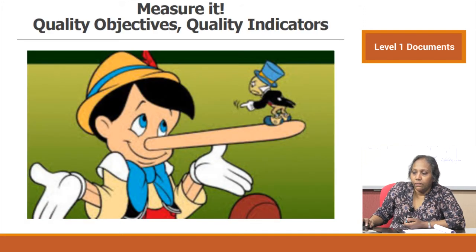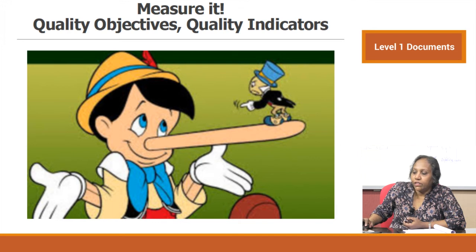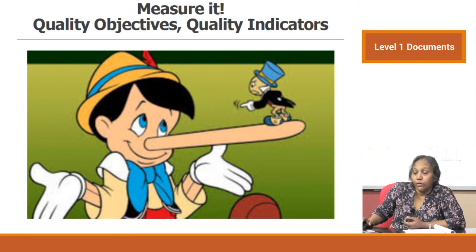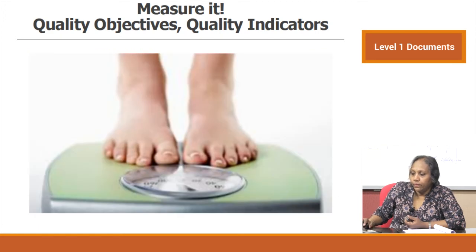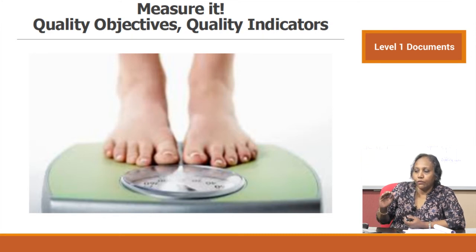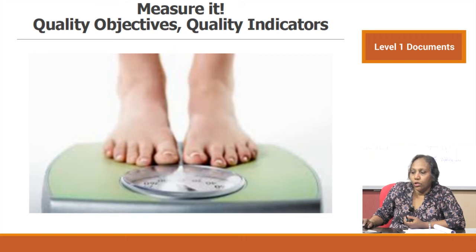If an objective is met, credit goes to everyone. If not met, the responsibility is everyone's. You must talk about objectives in departmental and interdepartmental meetings. Think of Pinocchio — every time he tells a lie, his nose lengthens, giving a measurable indicator of lies told. Similarly, if your objective is losing weight, you measure it by standing on a scale. If you have objectives, you must set indicators.